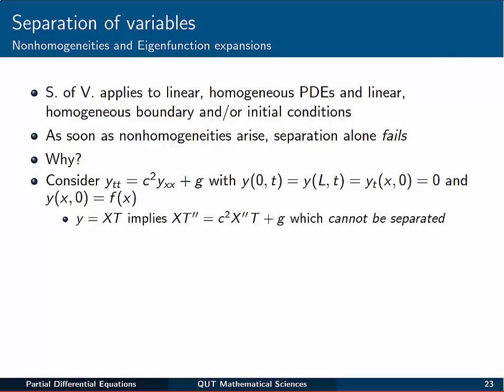Alright, so when we introduce separation of variables, we've been looking at only homogeneous PDEs along with some homogeneous conditions. But how do we deal with problems that have non-homogeneities? From the start, we've said separation of variables applies to linear homogeneous PDEs and linear homogeneous boundary and/or initial conditions. As soon as non-homogeneities arise, we fall into problems with the separation principle. Separation alone will fail.